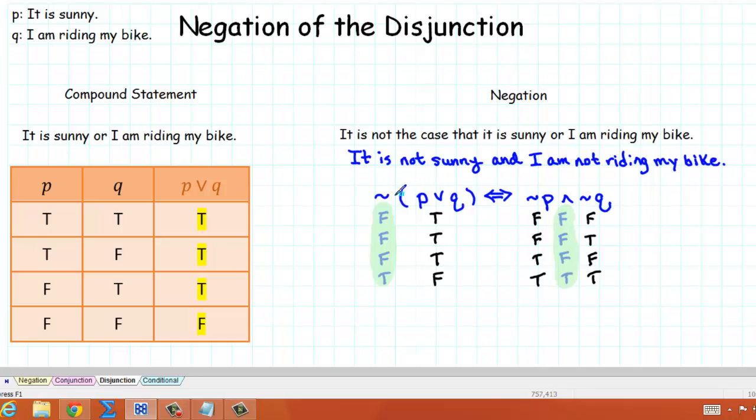So how do we find the negation of a disjunction? Well, notice that we in essence distribute the negation symbol through the parentheses. We first of all find the negation of P, which is not P, the negation of OR, which is AND, and the negation of Q, which is NOT Q.